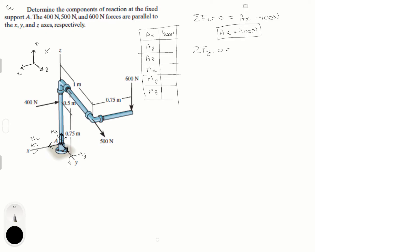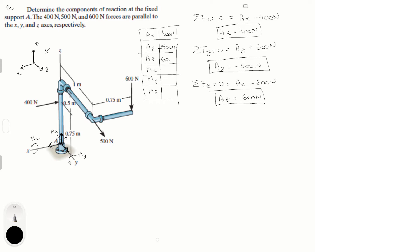Sum of the forces in Y is equal to 0. AY is going up and the 500 newton force is also going towards the positive Y axis. So solving for AY, you get negative 500 newtons — the reaction is going towards the negative Y axis. Sum of the forces in Z is equal to 0: AZ is going up and the 600 newton force is going straight down, so AZ equals 600 newtons.